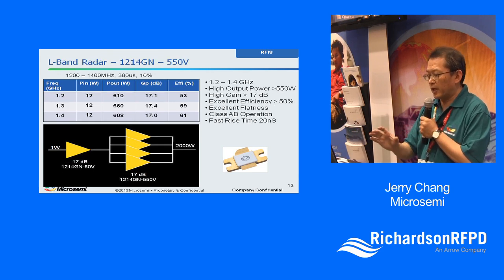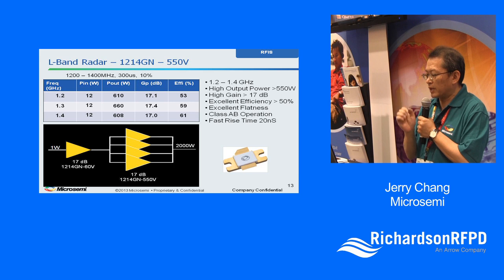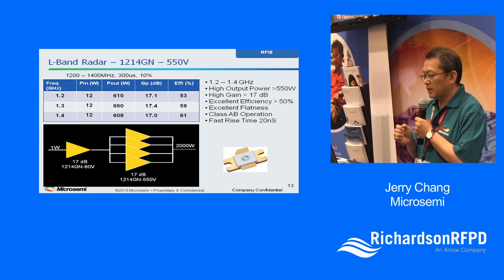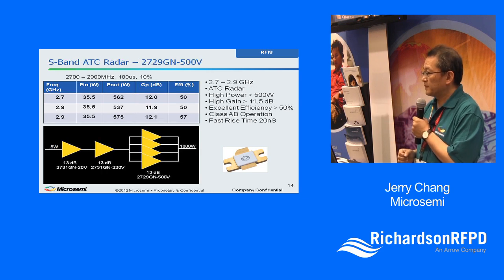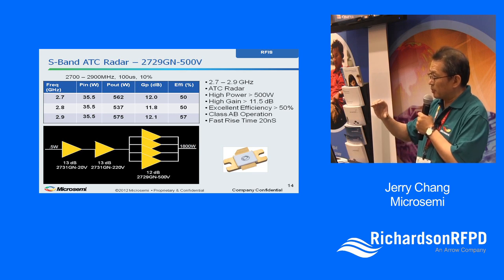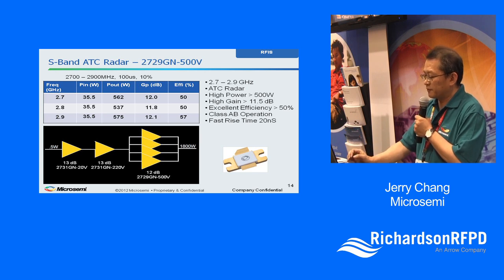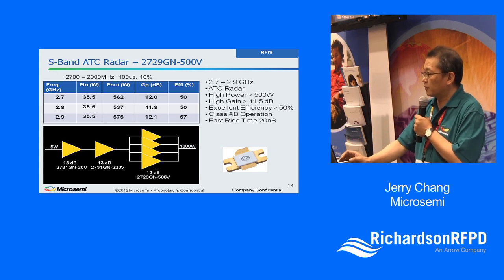On the radar side, the L-band 1.2–1.4 GHz transistor — our 550-watt single-ended device at 50-volt bias — produces over 600 watts output from 12 watts input, with 17 dB power gain and over 50% efficiency, excellent flatness, and fast rise time. One-drive-four configuration with 1 watt input yields over 2,000 watts. For S-band, the 500-watt device at 100 microseconds, 10% duty cycle maintains about 12 dB gain and above 50% efficiency. With 0.5 watts input through two driver stages driving four units, you get over 1,800 watts output.